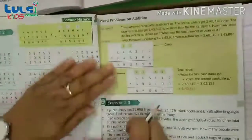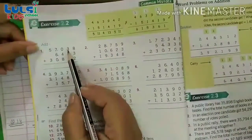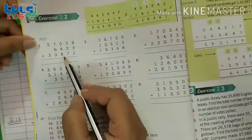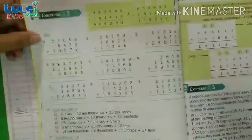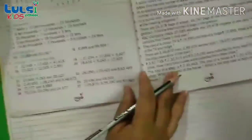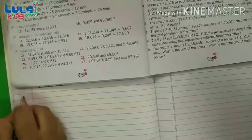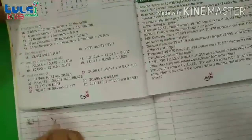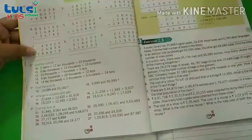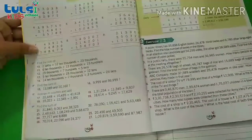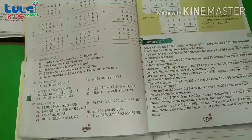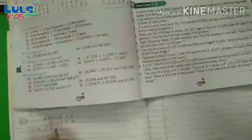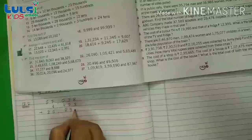Now turn the page. Yaha par aap logo ko 3 digit addition sikhaya hua hai ki agar 3 numbers ka addition ek saath karna hai toh hum log kaisa karayenge? Toh hum log main is tarikhe se aapko solution karke bata dete ho, question number 1. 5703, 6423 plus 3087.